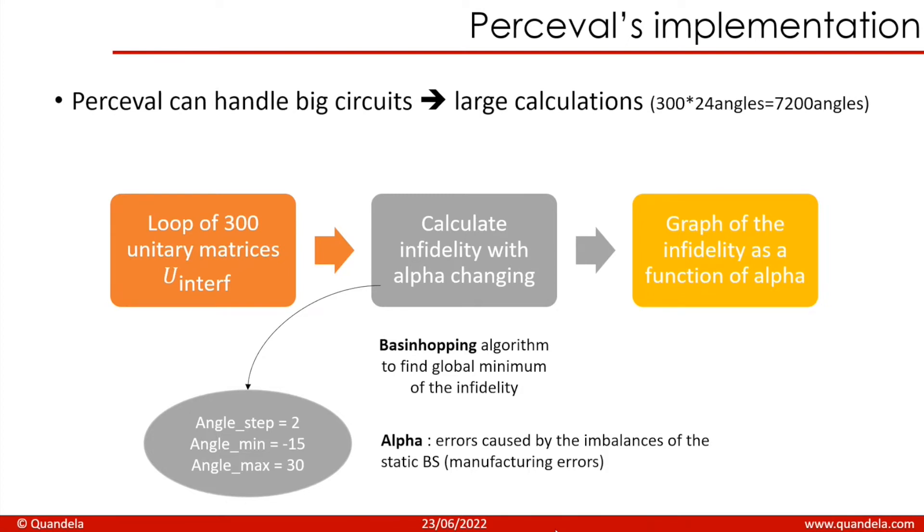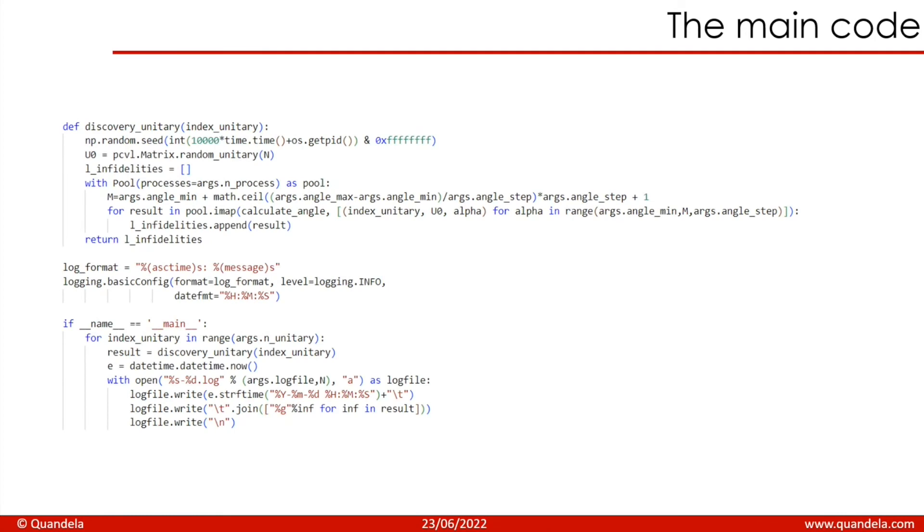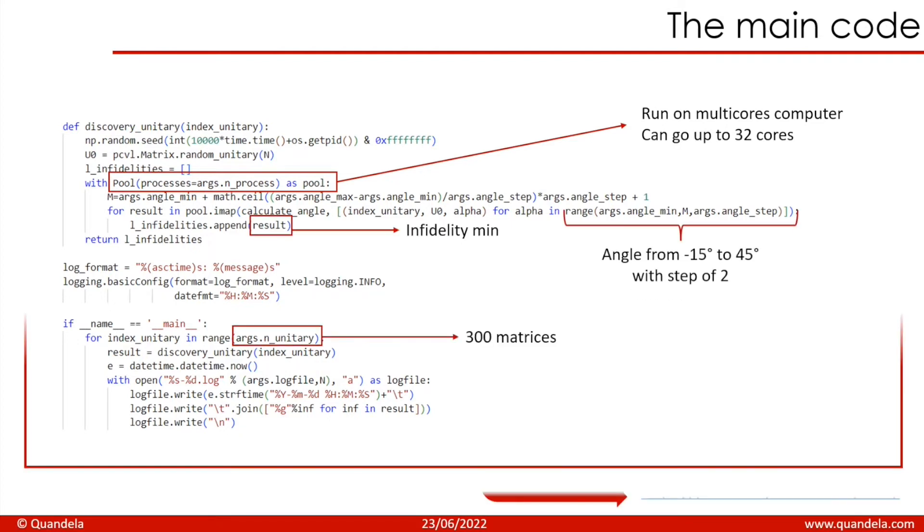The function is costly to run because we loop through 300 random unitaries and loop through several values of alpha, which gives the real world beam splitter. If you had to call this function that many times sequentially, it would have taken a very long time. To reduce the computation, we call this function in parallel with varying unitaries and angles with up to 32 cores, which approximately divide by 32 the times of computation using a pool from multiprocessing. All the code is available on the documentation of Perceval, and I will show you that we are running a multi-core computer that can go up to 32 cores with the pool from multiprocessing.